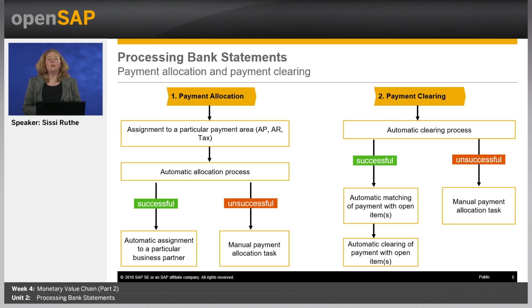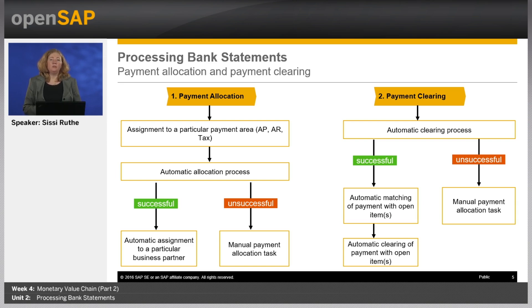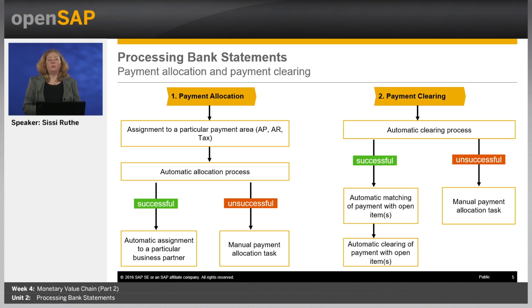In some exceptional cases — for example, missing customer or supplier information or transaction charges on foreign payments — the system cannot perform the processes automatically. In these cases, which should be less than 5%, manual payment allocation or manual payment clearing tasks will be created requiring user involvement. I will show you later in the system a manual clearing task created by the bank statement we will upload.